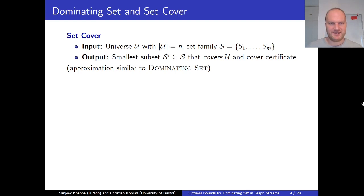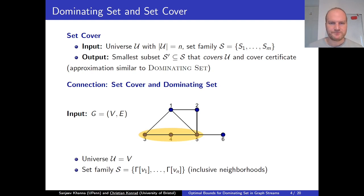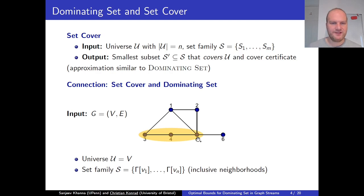Here's the connection between set cover and dominating set. Suppose we have a dominating set instance with input graph G with vertex set V and edges E. We want to cover all of V. To turn this dominating set instance into a set cover instance, we set the universe to be V, and the set family is the inclusive neighborhoods of all vertices. For example, vertex 4's inclusive neighborhood is {3, 4, 5}, so adding 4 to the dominating set corresponds to a set covering elements 3, 4, and 5. These problems can be reduced to each other in linear time.